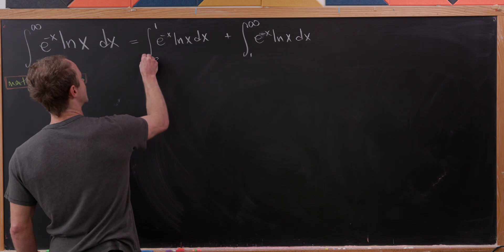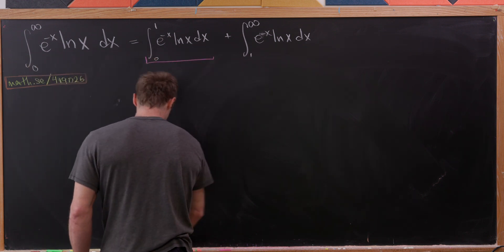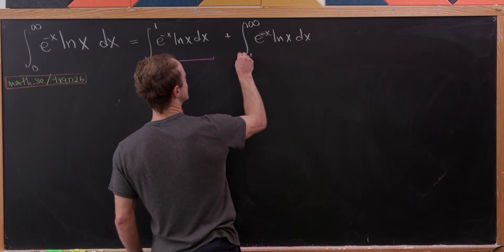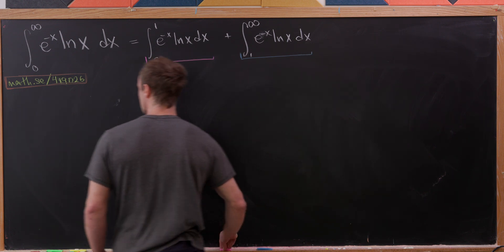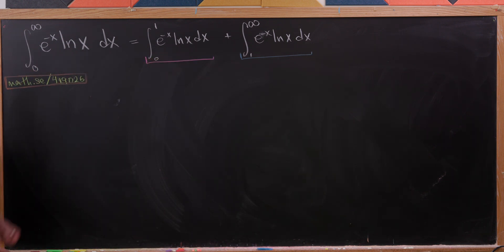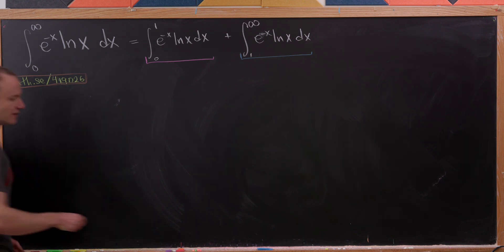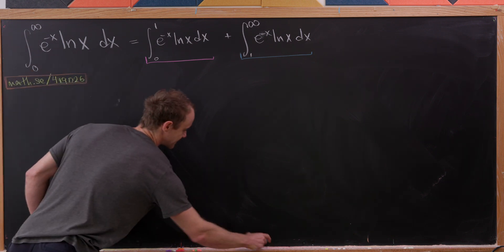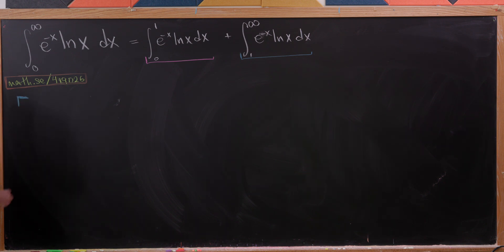I'm going to underline each of these in different colors: one in magenta and the second one in blue. And then I'll lay out the integration by parts for each of these parts over here on the left. Let's start with the blue integration by parts because that's fairly straightforward.